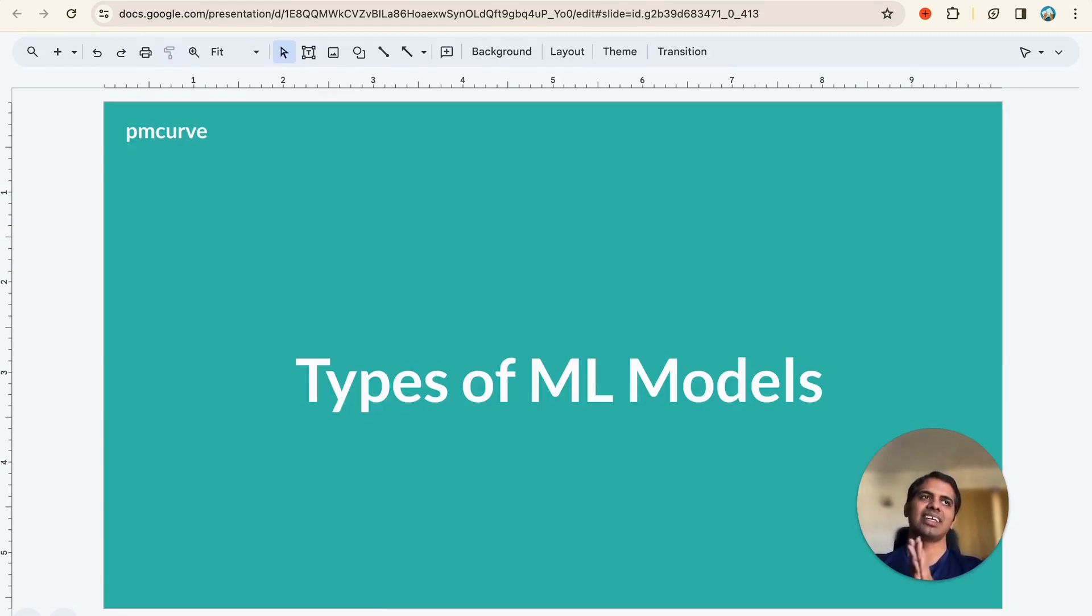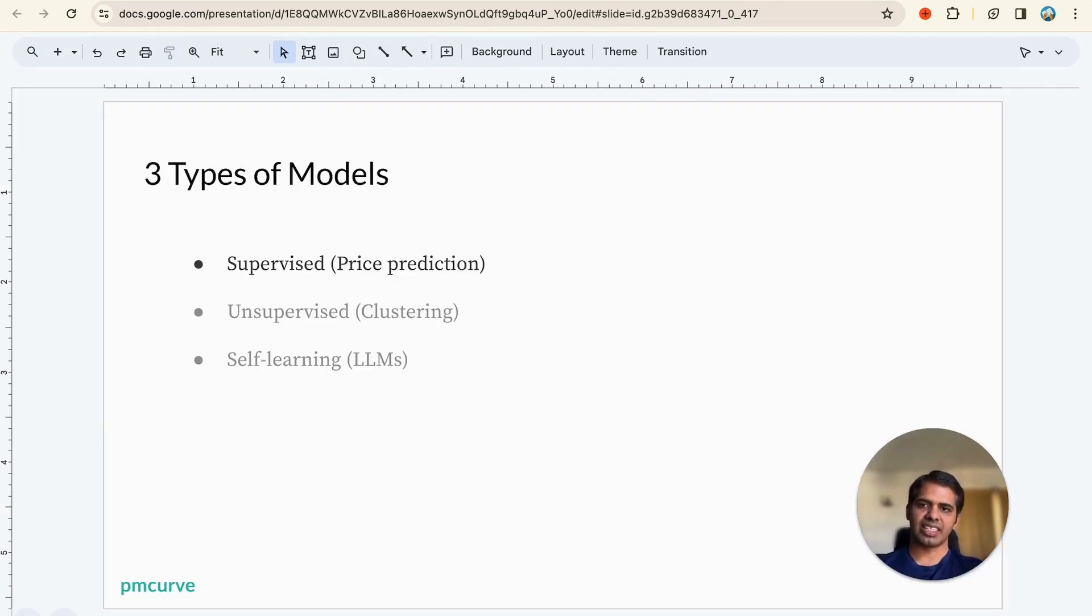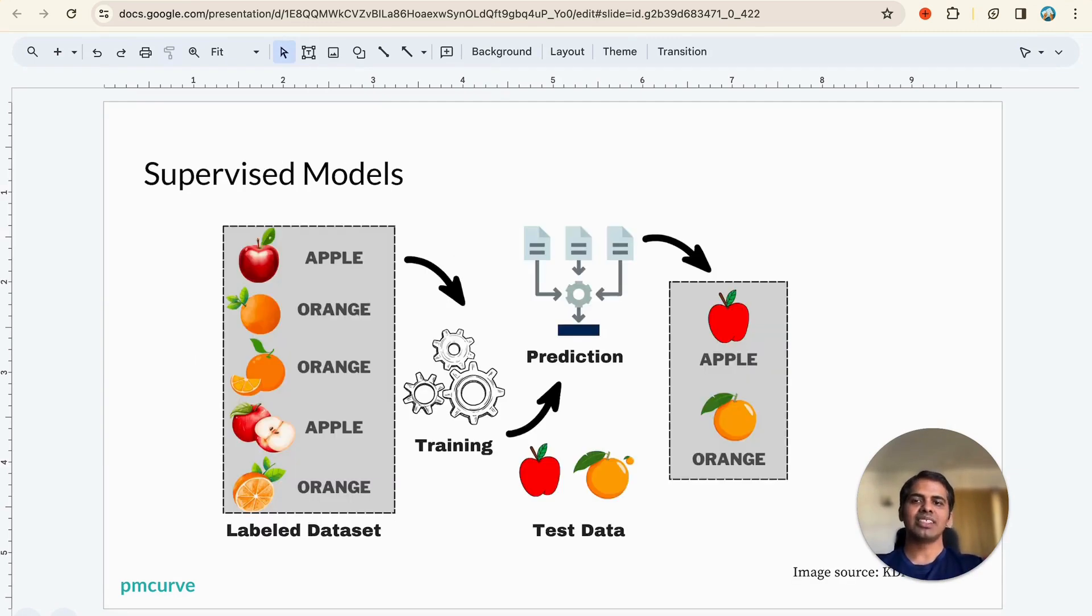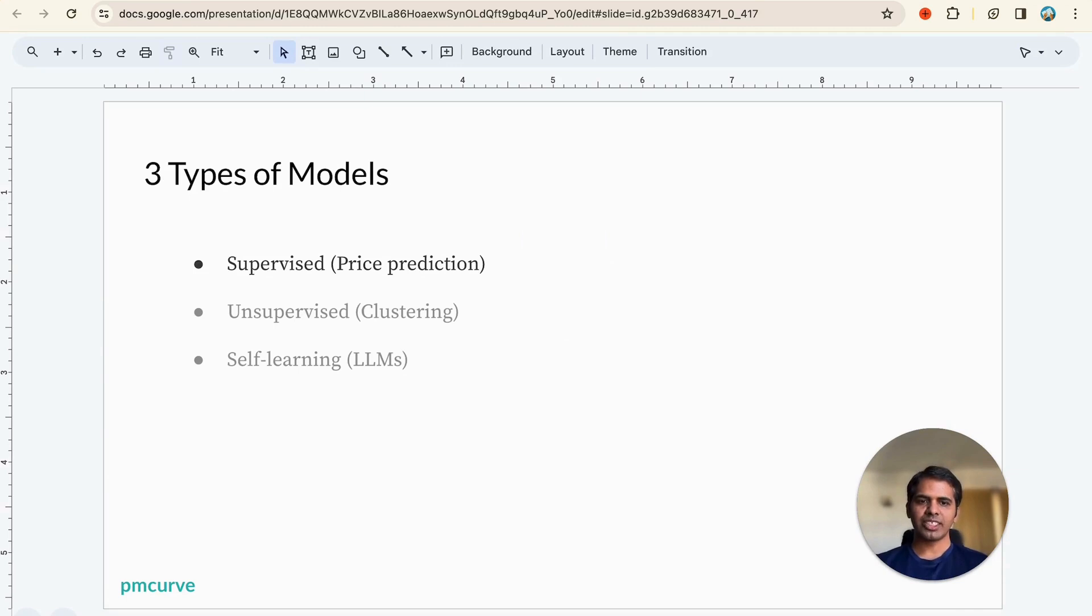Let's start with the types of machine learning models that we see usually. In general, there are three types of models that are pretty popular nowadays. One is supervised model, we'll talk in detail in this video. Then there is unsupervised and self-learning. Rather than getting into the definitions of these, let's get into supervised models in detail. Then later when we cover unsupervised and self-learning, I can explain what they are in simple language.